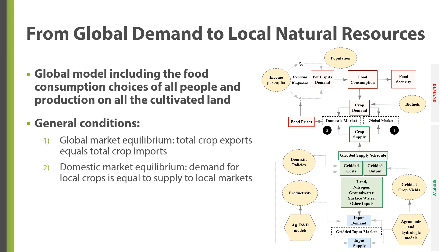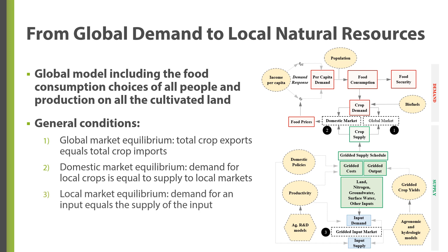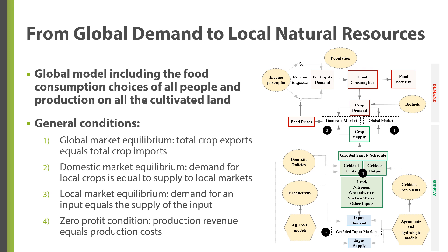Second, at the domestic level, equilibrium occurs when demand for local crops matches the supply to local markets. Third, within a specific local market, equilibrium is reached when demand for a specific input, such as labor, land, or water, equals the supply of that input. And lastly, fourth, is the zero-profit condition, which states that production revenue must equal production costs so that there is no incentive for firms to change their production levels.